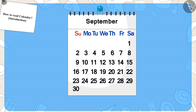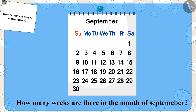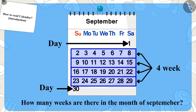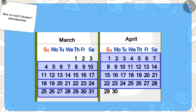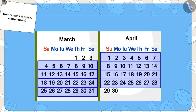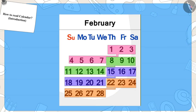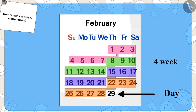Children, can you tell how many weeks are there in the month of September? Exactly — four weeks and a few days. And if you look closely, you will find that there are four weeks and a few days in every month. There are four weeks only in the month of February. And in certain years, it is four weeks and one day in the month of February.